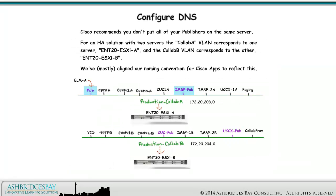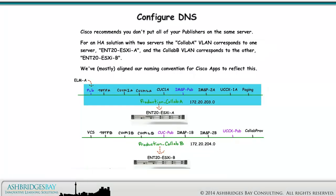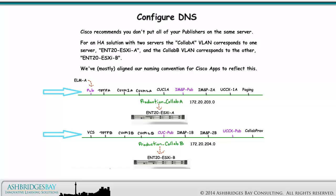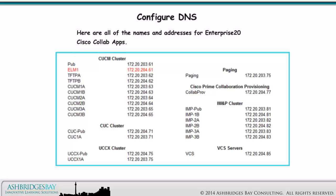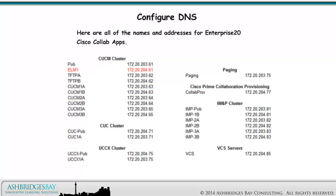Cisco recommends you don't put all of your publishers on the same server. For an HA solution with two servers, the CLAB-A VLAN supporting network 172.20.203.0 corresponds to Enterprise20 ESXIA, and the CLAB-B VLAN supporting network 172.20.204.0 corresponds to Enterprise20 ESXIB. If your cluster is distributed across two data centres, CLAB-A corresponds to one and CLAB-B to the other. Here are all of the names and addresses for Enterprise20's Cisco collab apps. We are going to add everything to DNS now — you only need to add the entries corresponding to the Cisco collaboration you plan on installing in your enterprise.